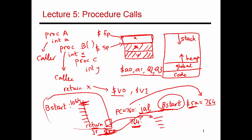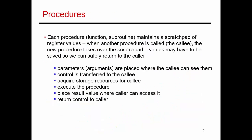Now we know most of the elements involved in handling a procedure call. This slide summarizes: when initiating a new procedure, pass arguments through registers A0 to A3, then transfer control to the callee using the jump and link instruction. The callee may grow the stack to allocate resources for its local variables — moving the stack pointer and frame pointer. Then you execute the procedure. When done, place results where the caller can access them in registers V0 and V1, and return control to the caller by jumping to the address already saved in the return address register.